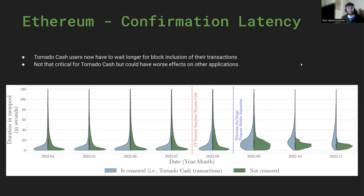For Tornado Cash, this might not be the biggest problem, but for other applications that very much rely on timely transaction execution, they might have big problems as soon as they are sanctioned and their transactions are not included in a timely manner. Thank you very much.